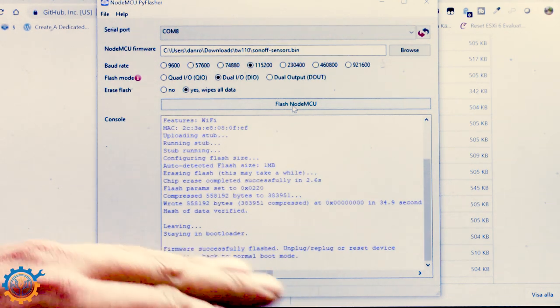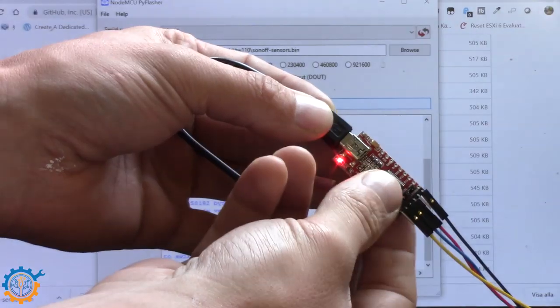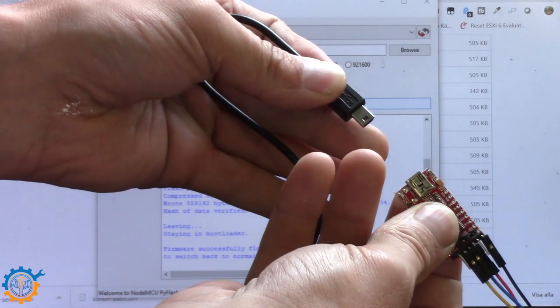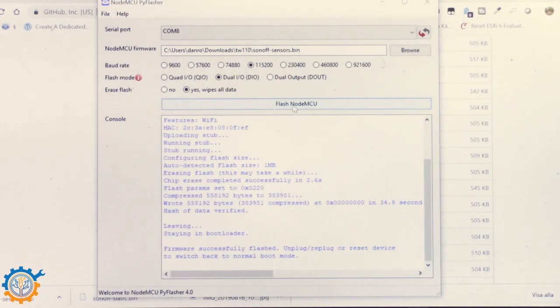It's now flashed and you can now reboot the Sonoff. Just pull out the plug and in again, basically pulling out the power and starting the Sonoff up again. Do not flash your Sonoff while it has mains power. Always disconnect all mains power when doing this.